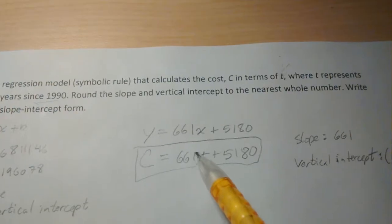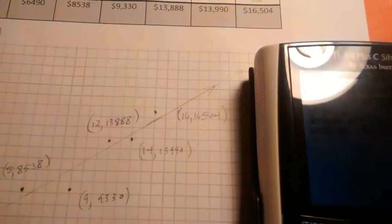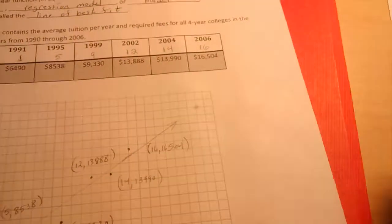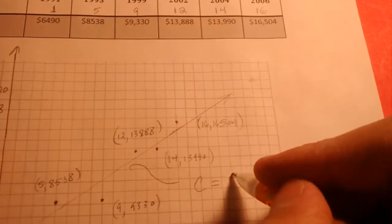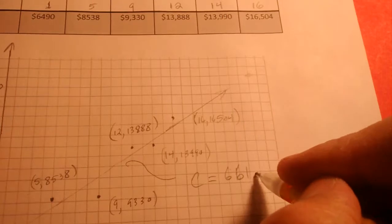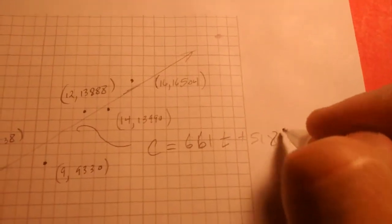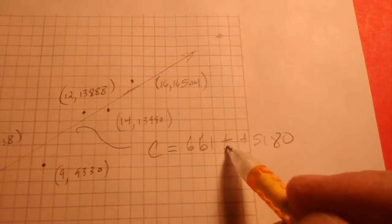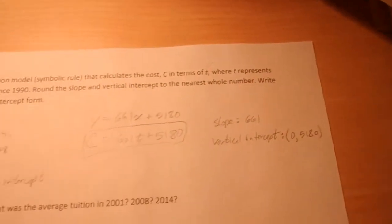That is the symbolic rule that represents that line right there. So I'm going to write that. Coefficient of the input variable is the slope and that is the vertical intercept. So I wrote that too over here off to the side.